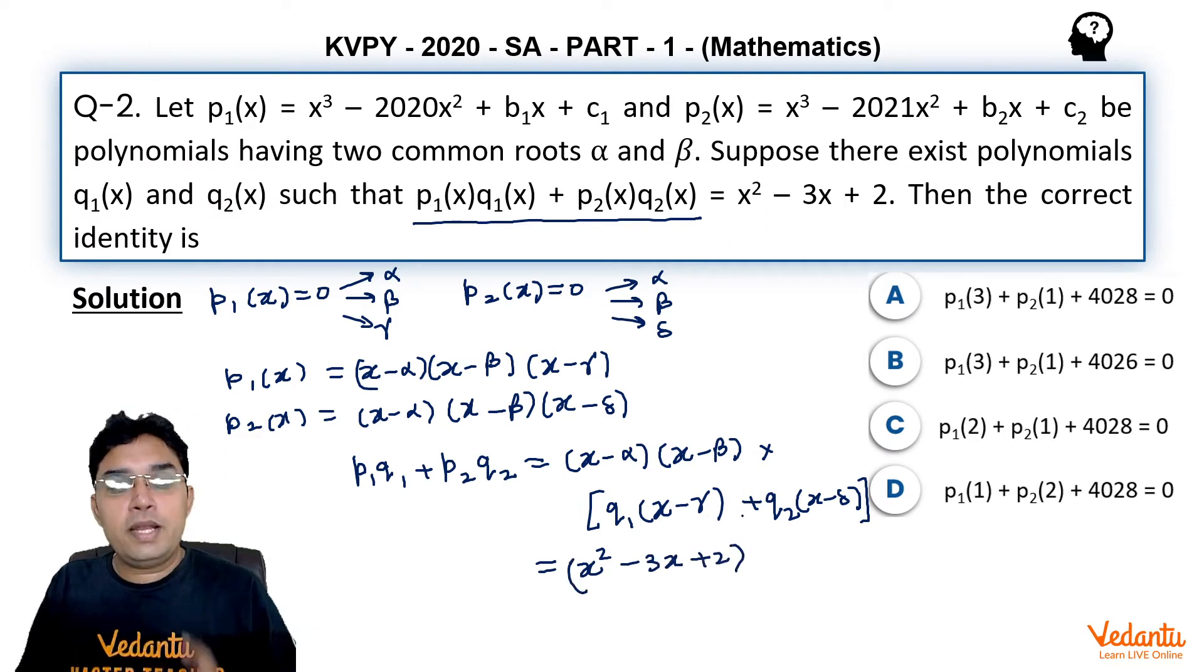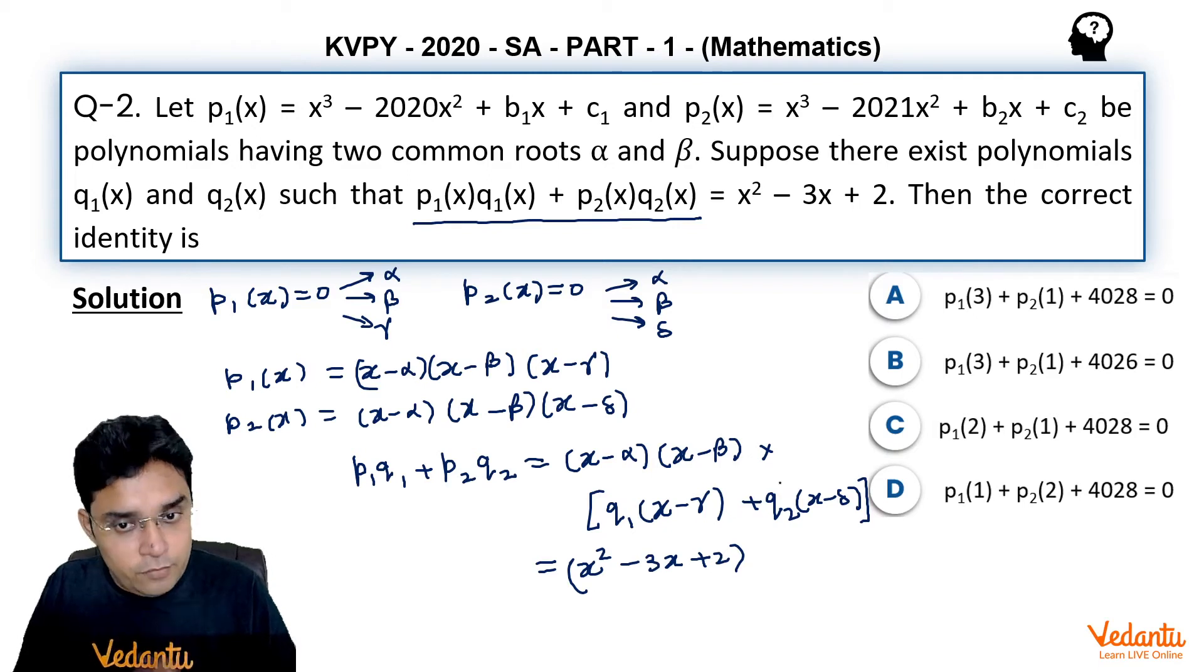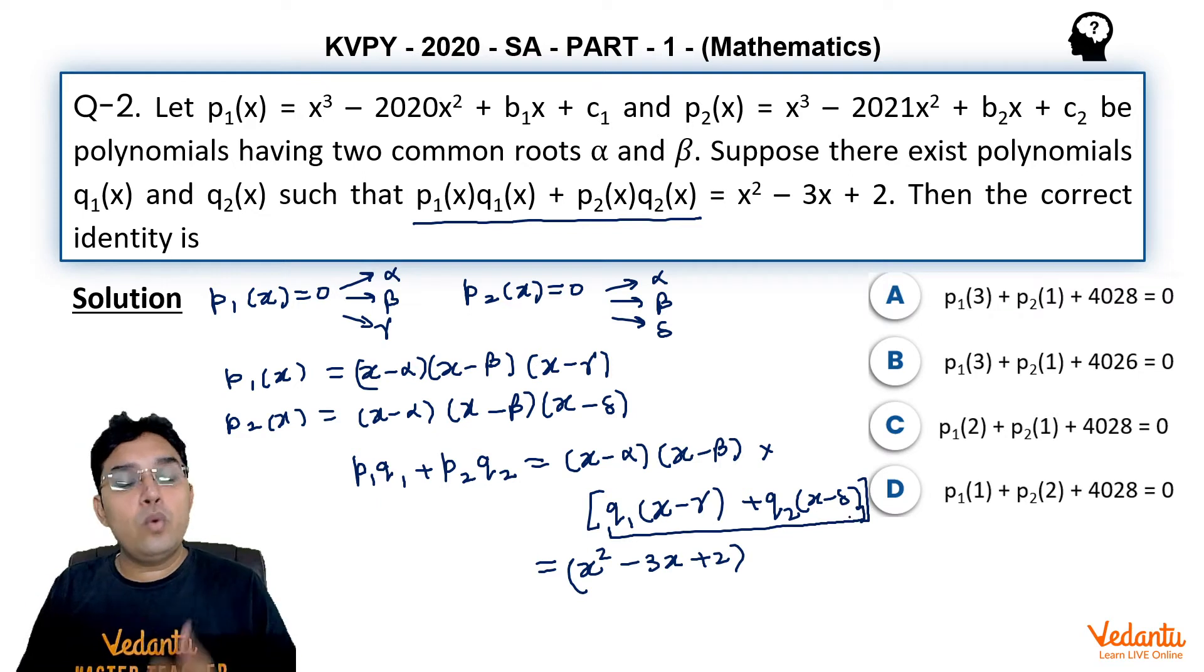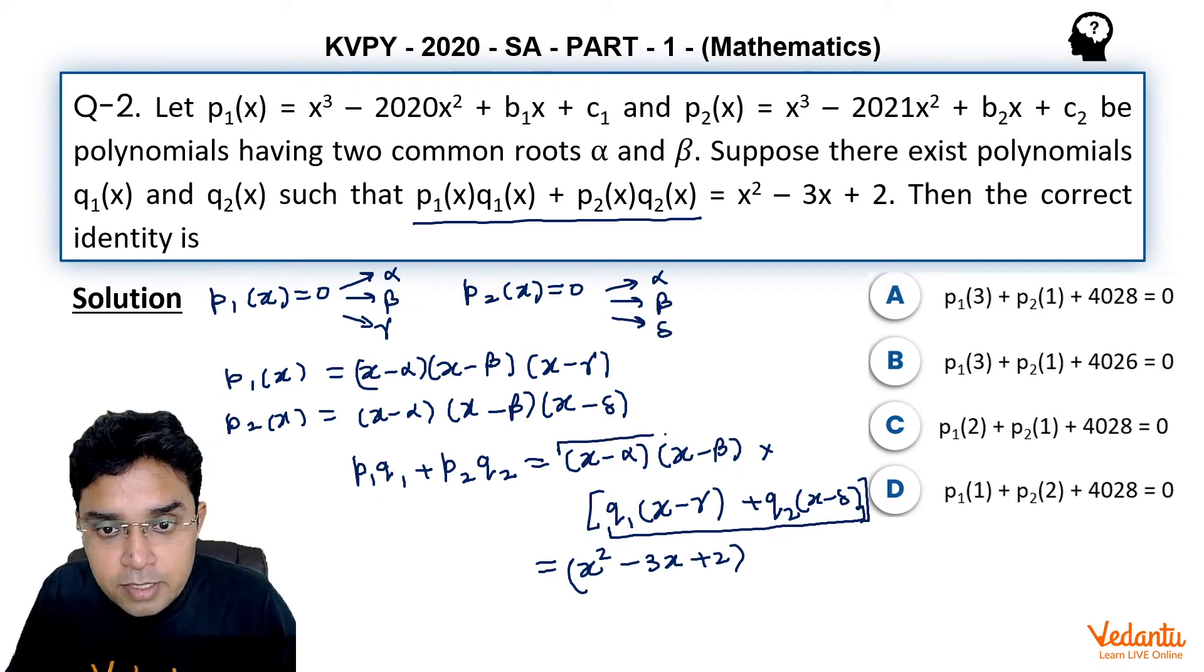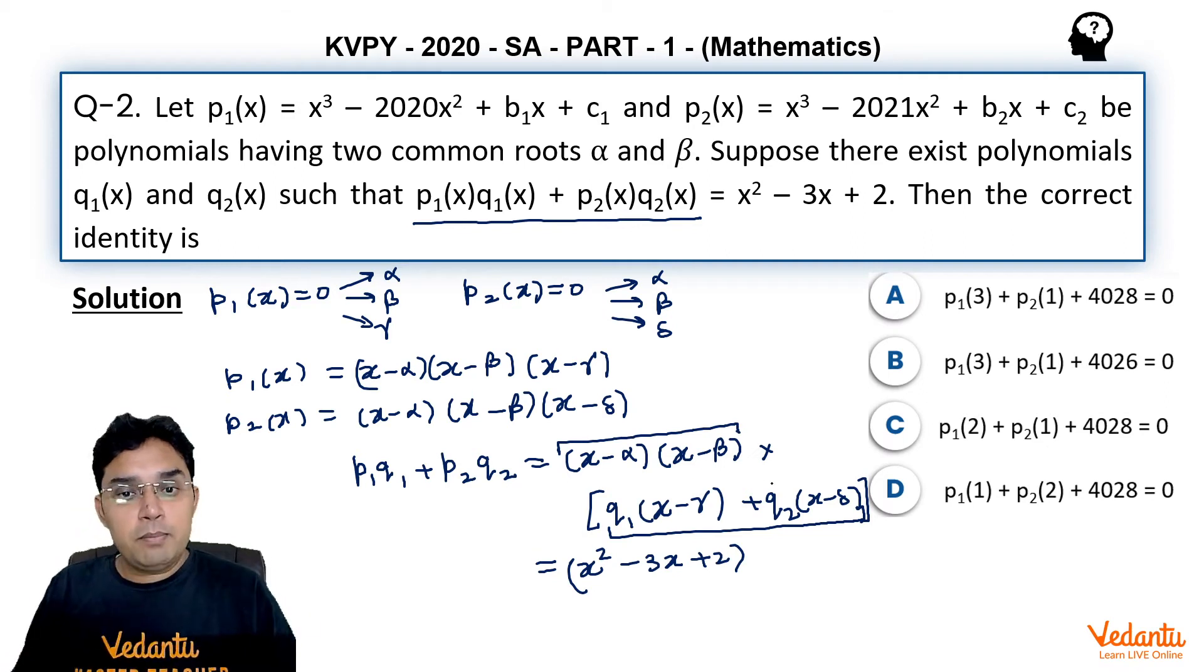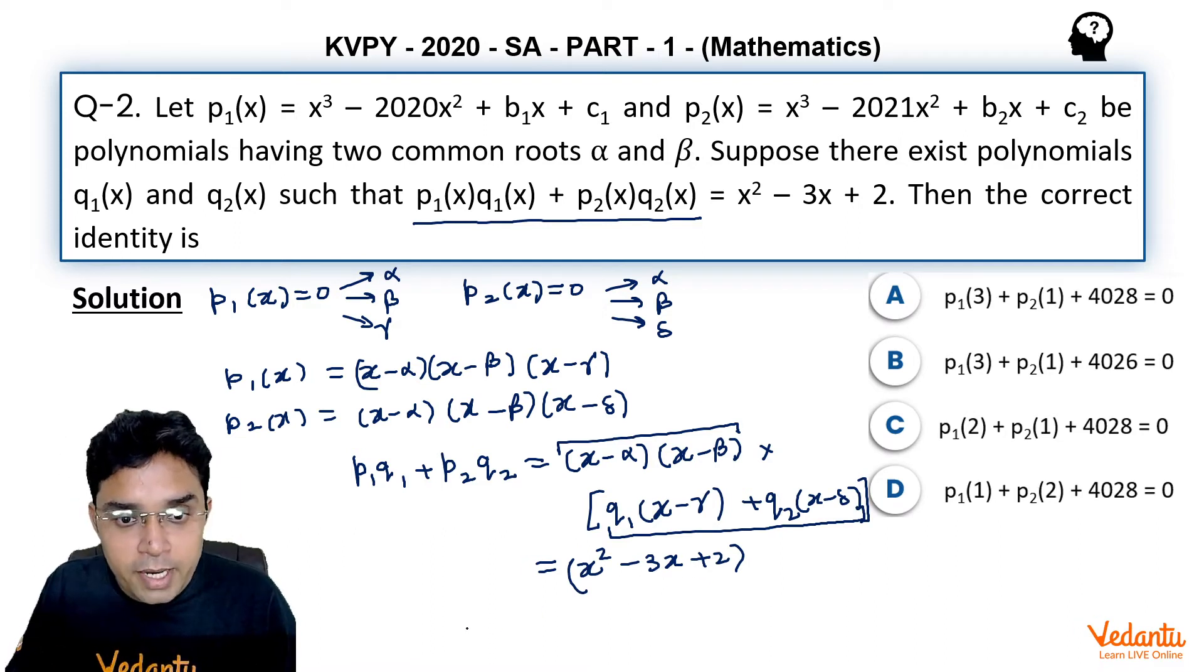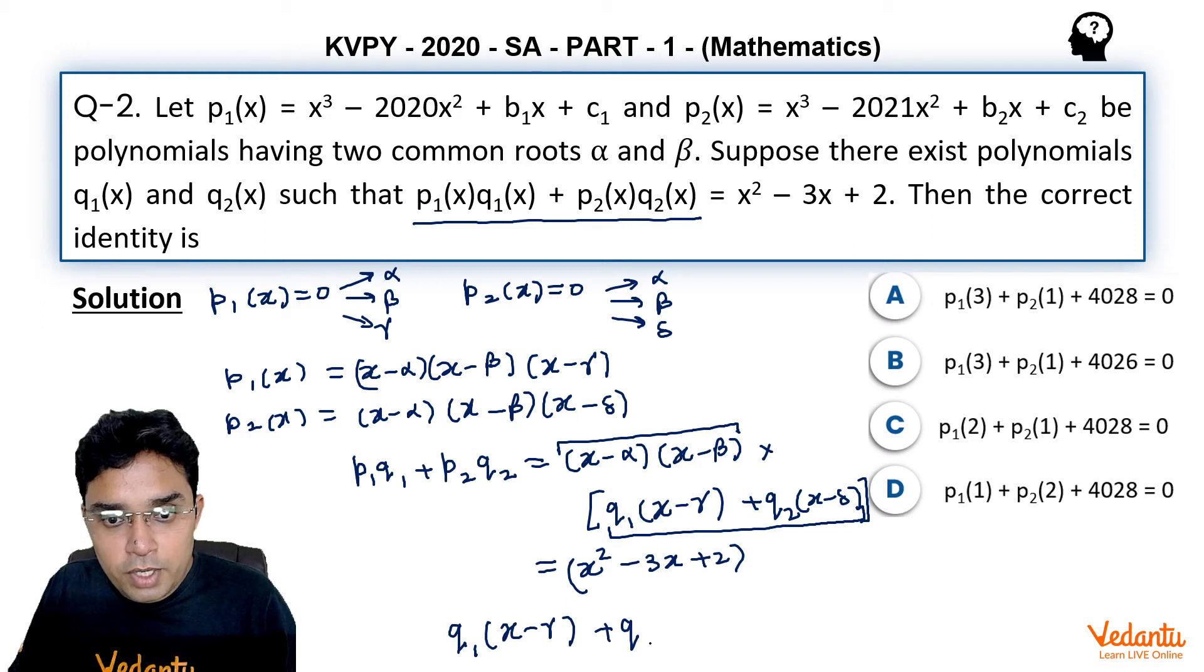Now because we are given this to be equal to x² - 3x + 2 and q₁ and q₂ are polynomials, this square bracket here has to be a polynomial only. But if already (x - α)(x - β) are multiplied with this square bracket and we are getting result as a quadratic, this is possible only if we get this square bracket, that is q₁ into (x - γ) plus q₂ into (x - δ), to be equal to 1.